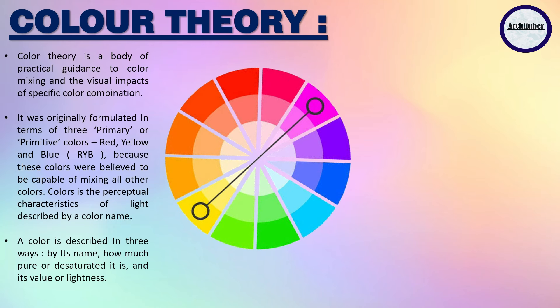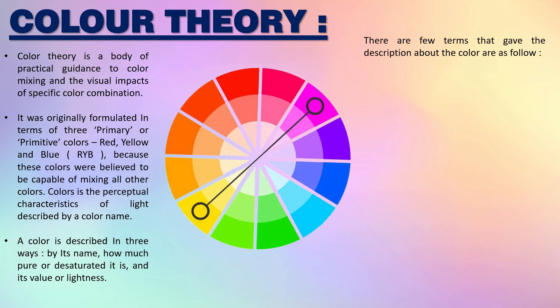Basically, a color is a perceptual characteristic of light described by a color name. A color can be described in three ways: by its name, how much pure or desaturated the color is, and its value or lightness. There are a few basic terms for color theory, so let's understand them.